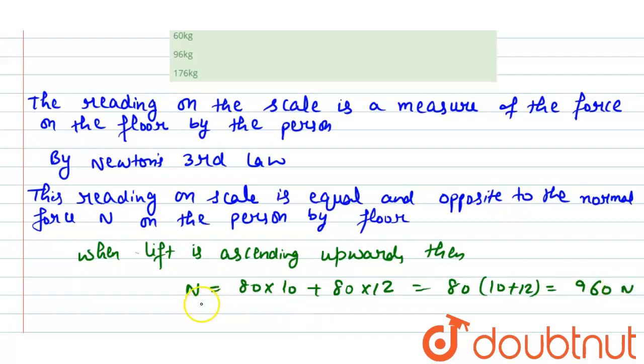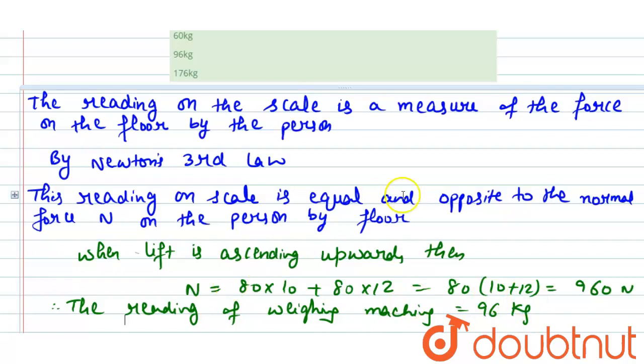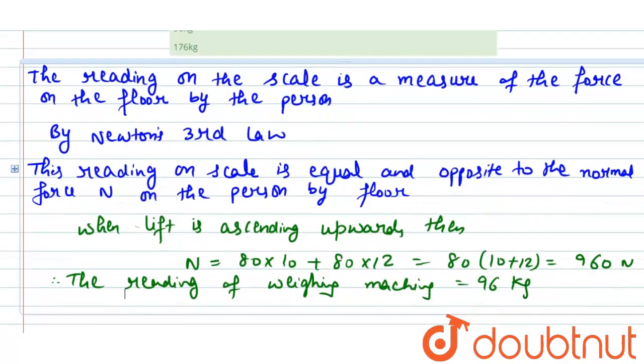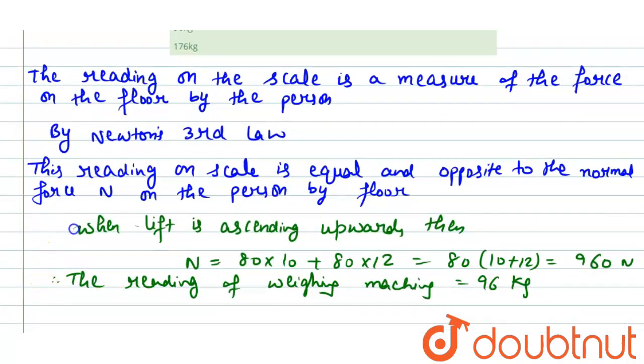And therefore we can say that the reading of weighing machine will be 96 kg, so we can say that option number three is correct.